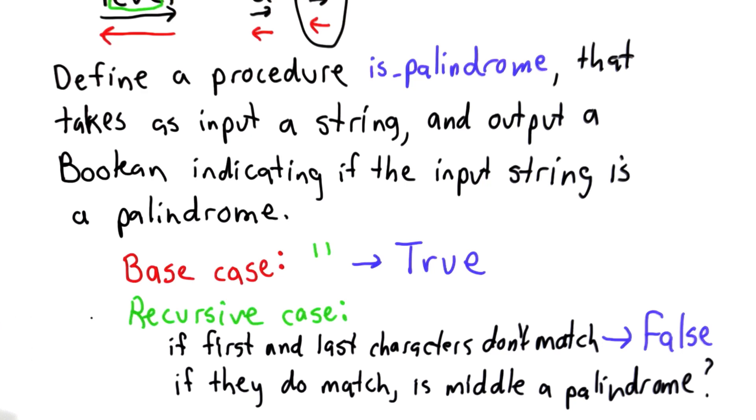So I hope this is enough for you to get started. So see if you can define the code for is_palindrome, keeping in mind that we can break it down into these two cases, where if it's empty, we know it's a palindrome right away. If it's not empty, we need to look at that first and last characters. If they do match, we also need to look at the middle of the string.